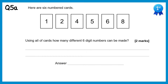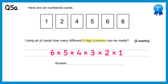For this question we have 6 numbers to select from, and we're looking to make a 6 digit number. So there are 6 ways of selecting the first digit. Once we've picked that one, there are 5 for the next digit, and then 4 for the next, 3 for the next, 2 for the next, and there's only 1 way of selecting the final digit. So if you times all of these, you'll get 720.